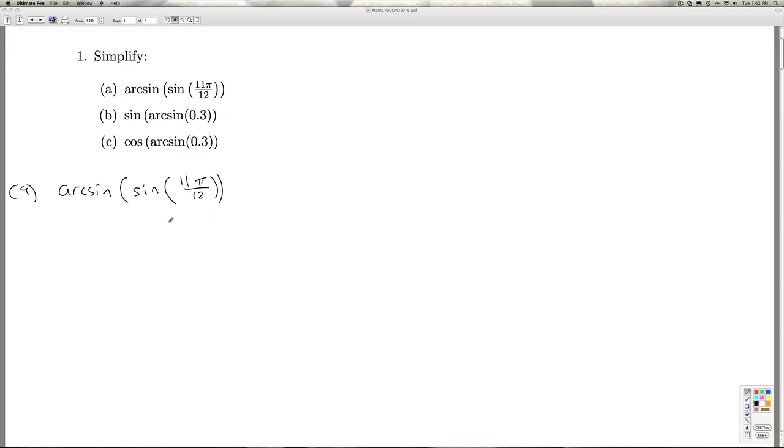Because remember, the arcsine gives us values in a particular range of numbers. The arcsine of x, the range of that is minus π over 2 to π over 2.